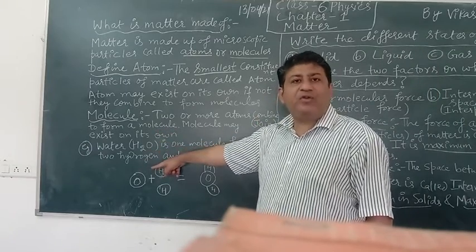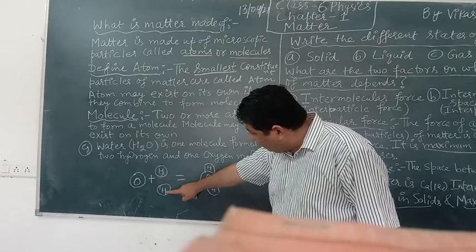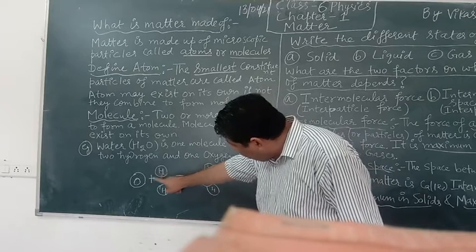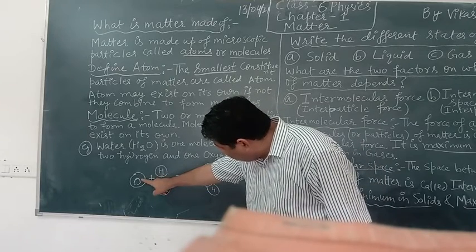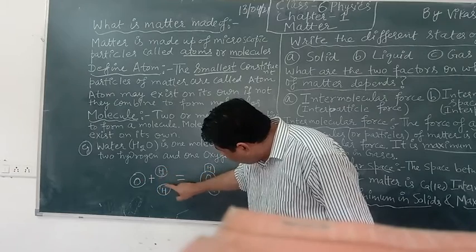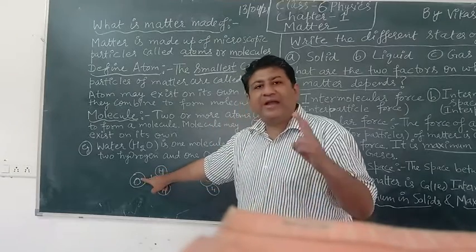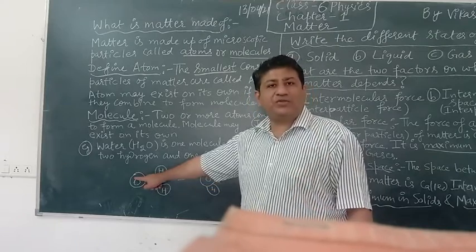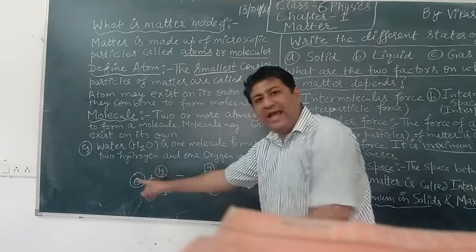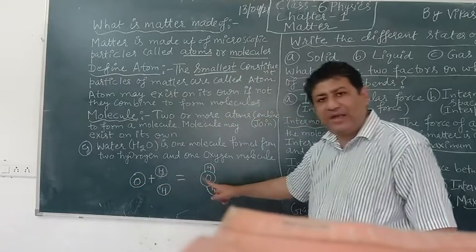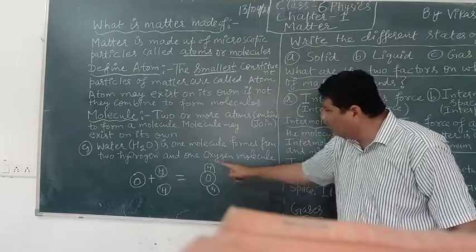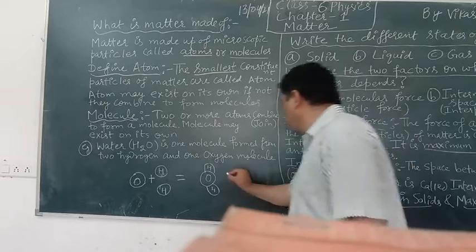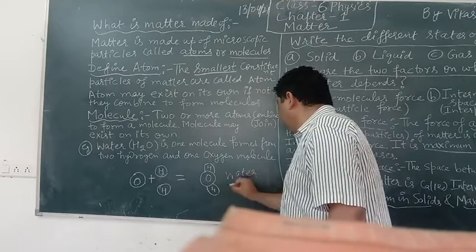Let's see it from an example. You would notice that I have taken two atoms of hydrogen and one atom of oxygen. So one, two, three atoms in total. Two of hydrogen, one of oxygen. They combine. And after combining, they form one water molecule. What is this? This is one water molecule.